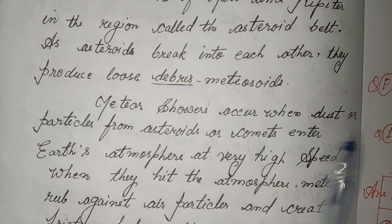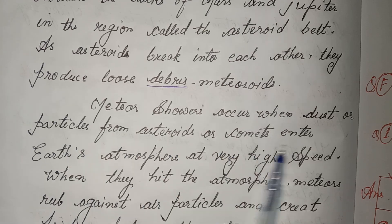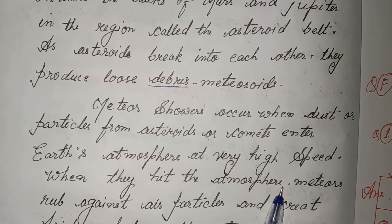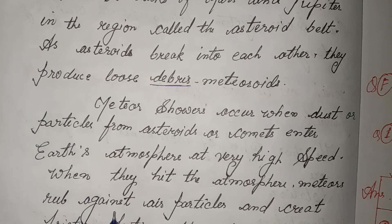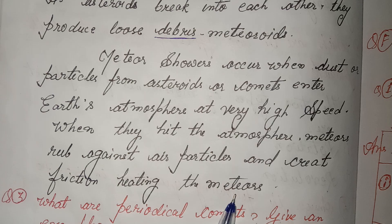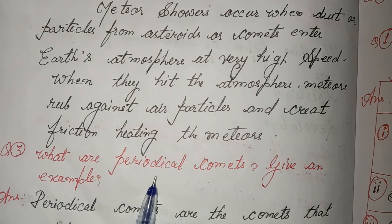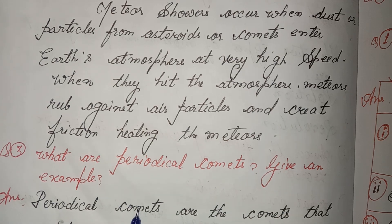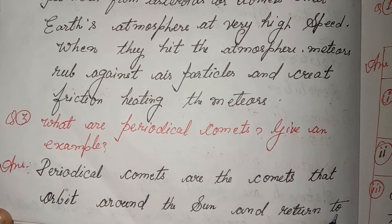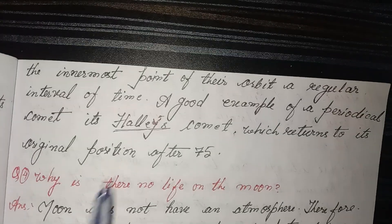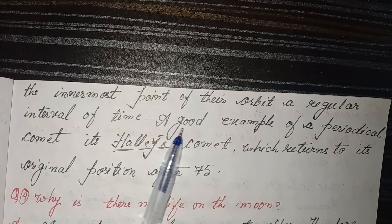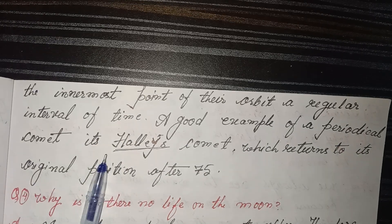How is a meteorite formed? Many meteorites are formed from the collisions of asteroids that rotate around the sun between the tracks of Mars and Jupiter, in the region called the asteroid belt. As asteroids break into each other they produce loose debris — meteorites. A meteor shower occurs when dust or particles from asteroids or comets enter Earth's atmosphere at very high speed. They rub against air particles and create friction, heating the meteors. Third, what are periodic comets? Give an example. Answer: periodic comets are comets that orbit around the sun and return to the innermost point of their orbit at regular intervals of time. A good example is Halley's comet, which returns to its original position after 75 years.